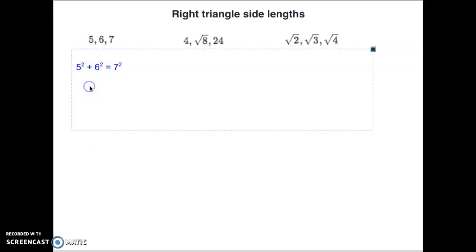Well, 5 squared is 25. 6 squared is 36. 7 squared is 49. 25 plus 36 is 61. Does that equal 49? Well, the answer to that is no, it doesn't. So that one does not work.